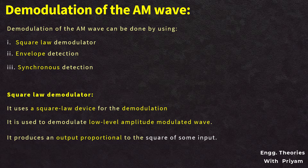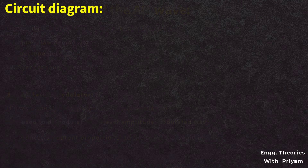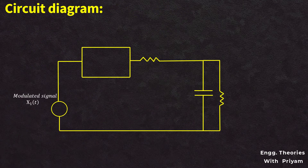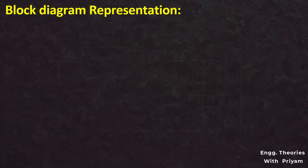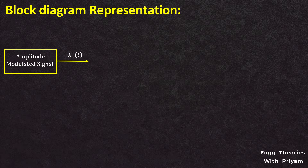The square law device means the output provided by the device will be the square of the input. The demodulator circuit contains an amplitude modulated signal source X1(T), a square law device such as a diode whose output is X2(T), and a resistor R and capacitor C forming a low-pass filter. The output of the low-pass filter formed by resistor R1 and capacitor C1 is the desired demodulated signal X_out, or the message signal. The block diagram shows the AM signal X1(T) fed into the square law device.